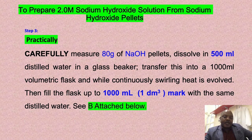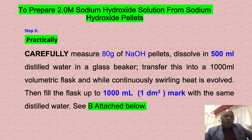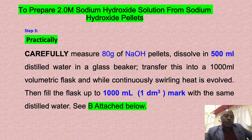Once a uniform solution has been formed, we transfer it from the beaker into a 1000 ml volumetric flask. Using the deionized or distilled water, we fill up to the 1000 ml mark. This gives us the two molar sodium hydroxide solution prepared from sodium hydroxide pellets.